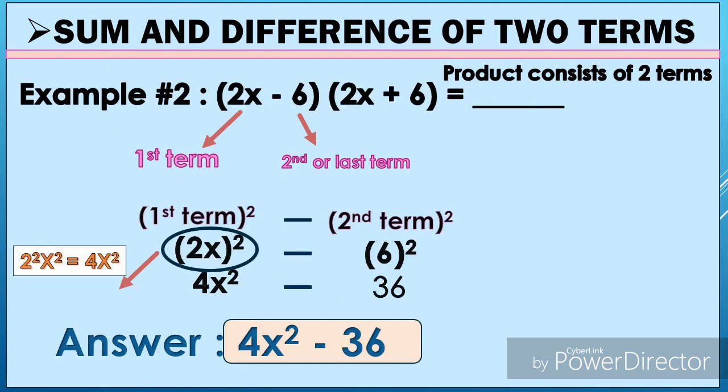Now for example two: the quantity of (2x − 6) times the quantity of (2x + 6). The first term here is 2x and the second term is 6. Following the pattern, we square the first term: (2x)² = 2²x² = 4x². We square the second term: 6² = 36. Therefore, our final answer is 4x² − 36.